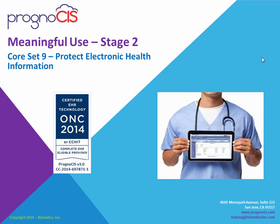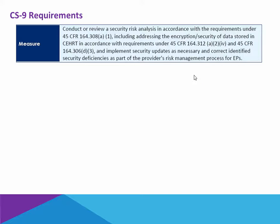Meaningful Use Stage 2, Core Set 9: Protect Electronic Health Information. The requirements of Core Set 9 are twofold. There is the responsibility of the vendor, which is Prognosis, but then there's also the responsibility of you, the eligible provider — the human element.